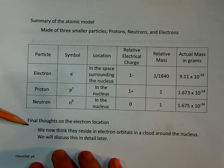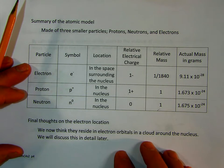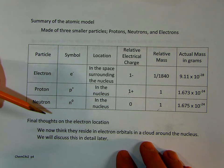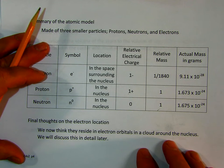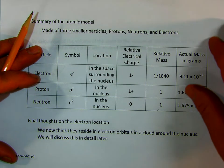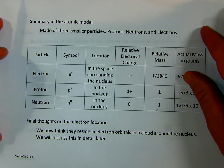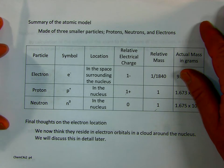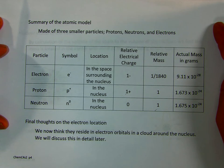Final thoughts on the electron location. We now think that it resides in electron orbitals or in a cloud around the outside of the nucleus. We'll discuss that later in great detail as we look at electron configurations. But you now have a little bit of the history and some contribution of the people that came up with their modern concept of the atom.